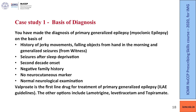There are no neurocutaneous markers — important because certain epilepsies occur with brain or spinal cord tumors like neurofibromatosis type 1. For this patient, valproate is the first line for primary generalized epilepsy as per ILE guidelines. Other options include lamotrigine, levetiracetam and topiramate.